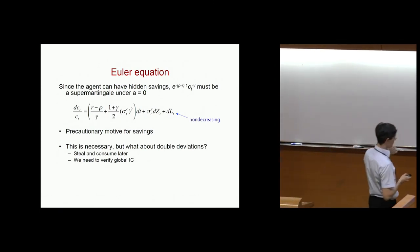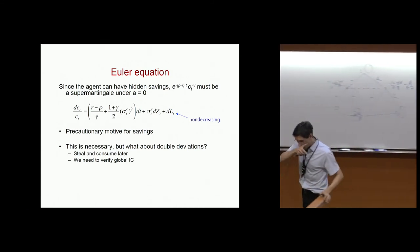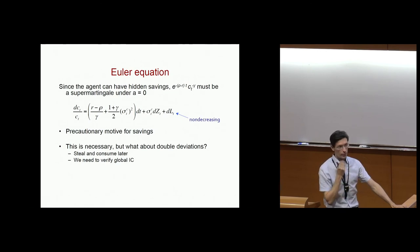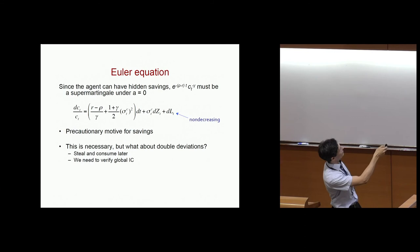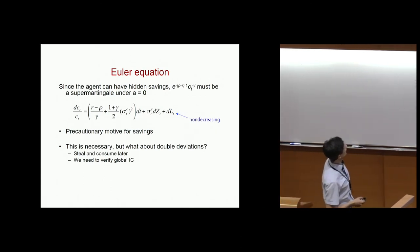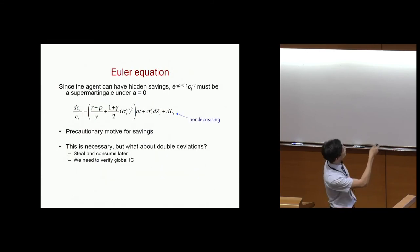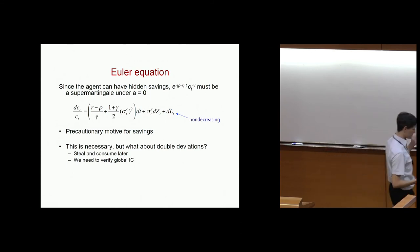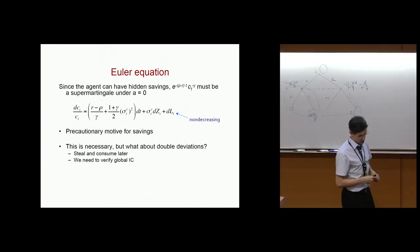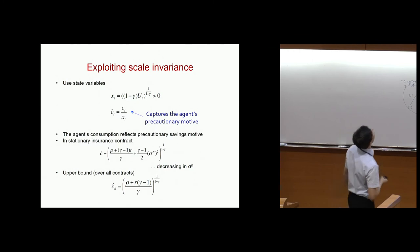The incentives to save — I don't have to talk about this very much because it's very standard. There is the Euler equation, which says that the marginal utility of consumption times an appropriate adjustment has to be a martingale. That's the incentives to save. It turns out the incentive constraint for stealing takes care of deviations with just stealing, and if the Euler equation holds, the agent does not want to deviate with savings. But the question of joint deviations is still open, so I'll ignore it for now.